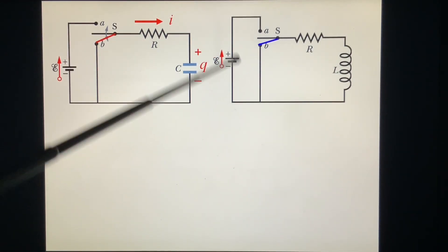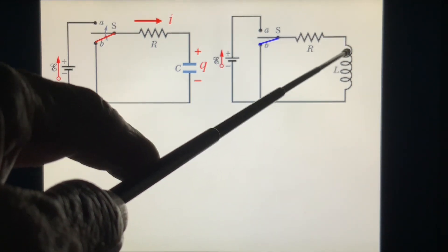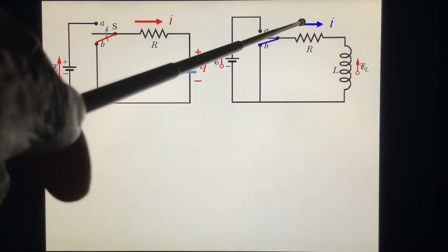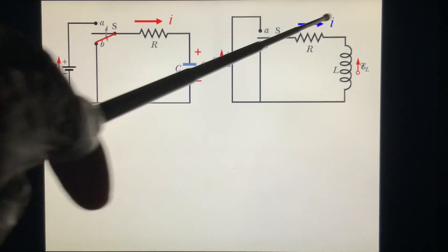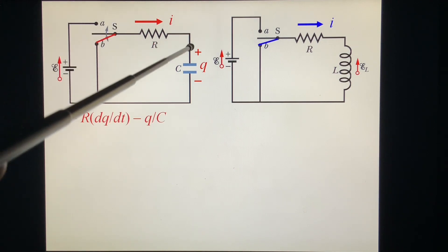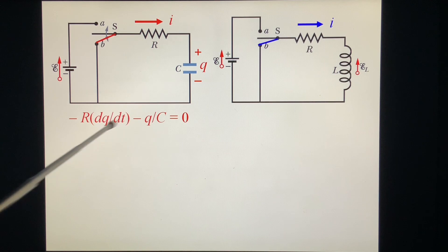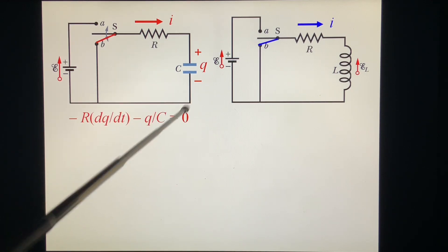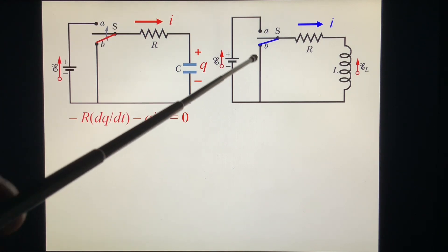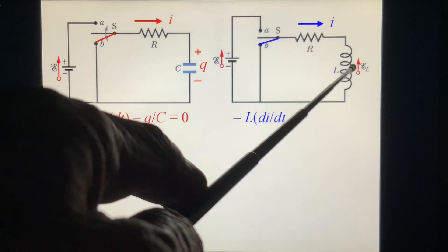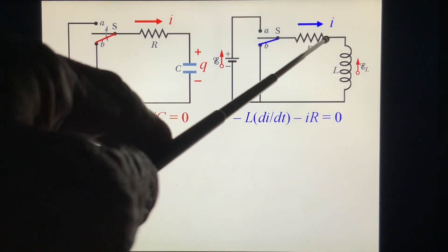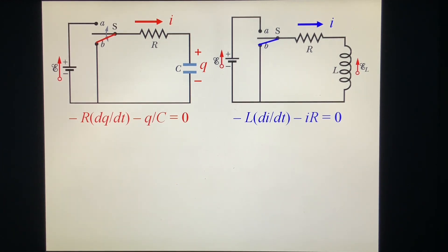Before we switch, we have a current and I equals epsilon/R. The voltage drop across the inductor is 0. Now we switch. Assuming I in this direction, from here: minus RI — where I is dQ/dt — minus V, where V is Q/C, equals 0. And for the inductor case: minus IR minus L dI/dt equals 0. These two equations are very similar.